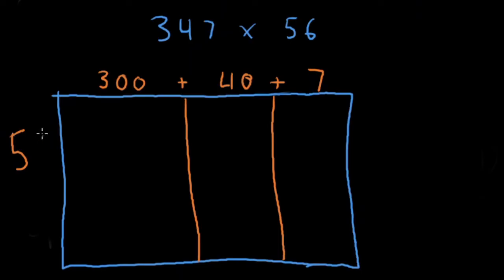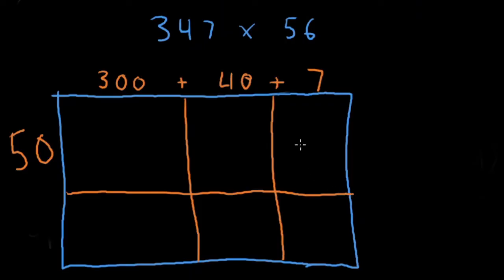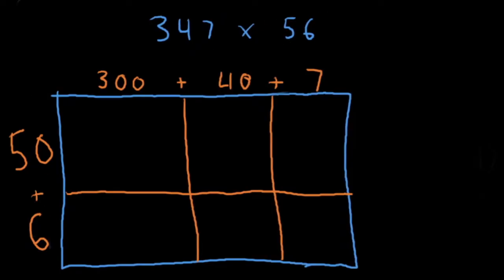Now let's break apart 56. We have five tens, so that gives us 50, and we have six ones, so that gives us 6. Small addition symbol: 50 plus 6 gives us 56.